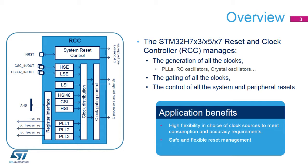The STM32H7 X3, X5, X7 reset and clock controller manages the reset, the system, and peripheral clock generation. STM32H7 X3, X5, and X7 devices embed four internal oscillators, two oscillators for an external crystal or resonator, and three phase-locked loops, or PLLs. Many peripherals have their own clock, independent of the system clock.